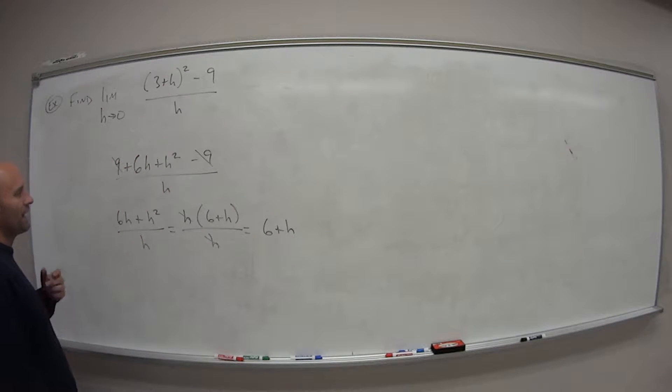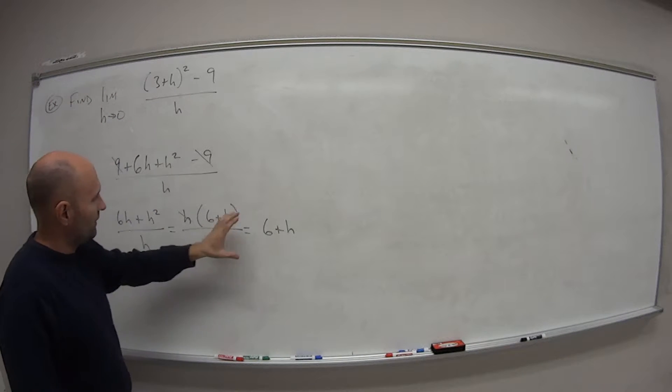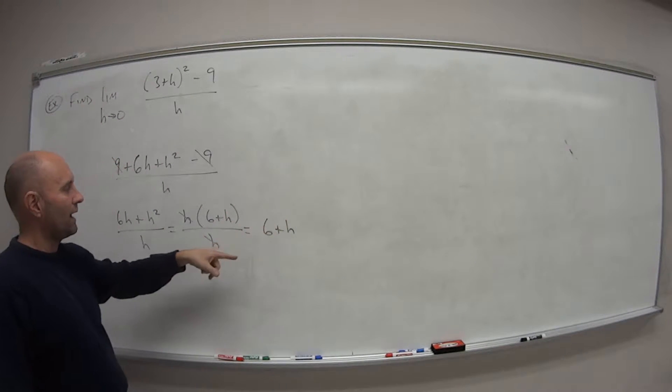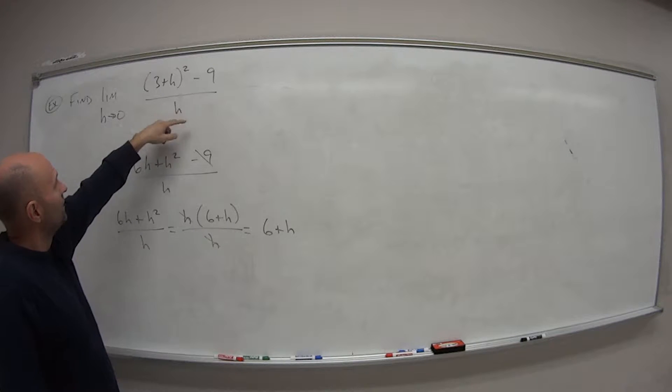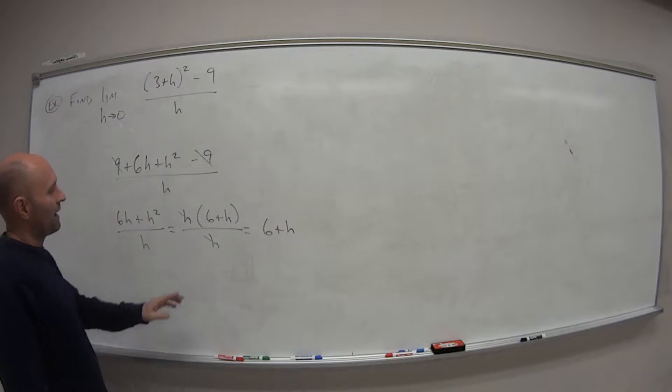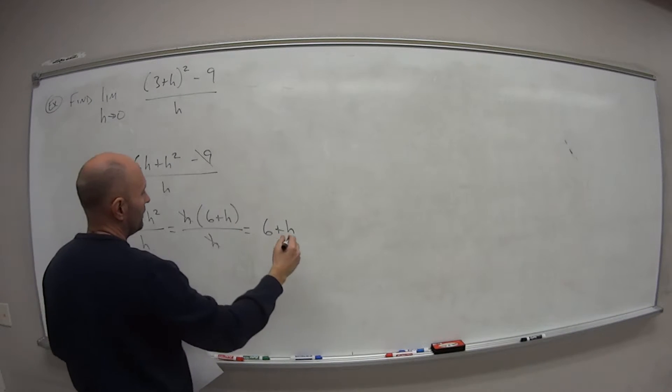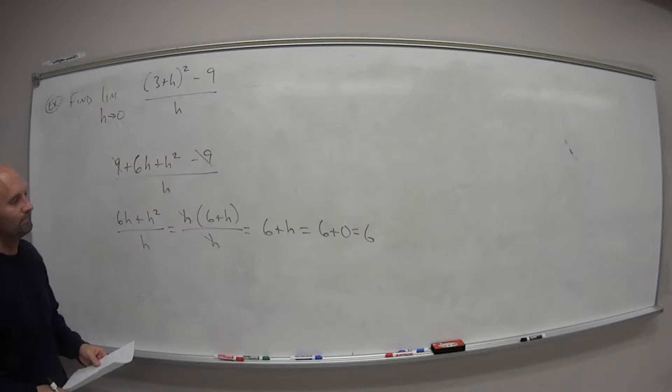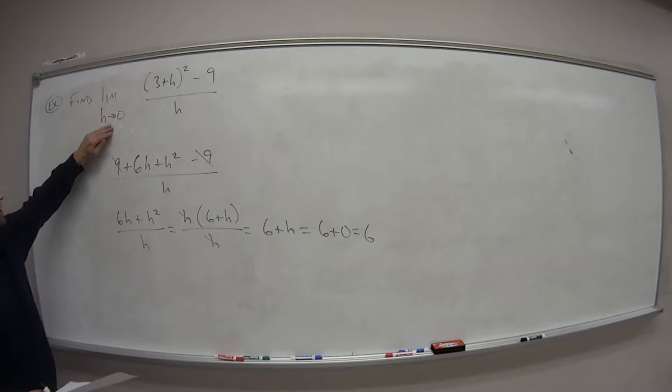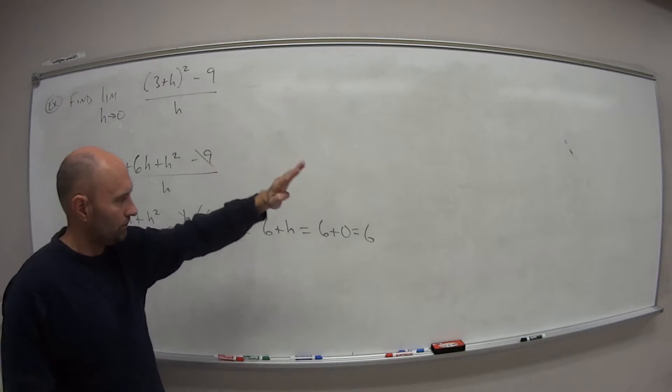So again, using that idea before, the limit of this one is the same as the limit of this one, as long as they're equal everywhere except at the specific point, which obviously at zero, they're not going to be the same because this one would have zero in the denominator. This one, we don't have to worry about it. So we're just going to plug this in now, plug in our value for a, so 6 plus zero is 6. So the limit as h approaches zero of this rational function is 6.